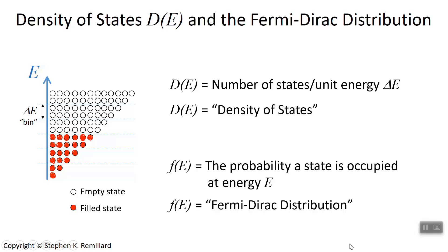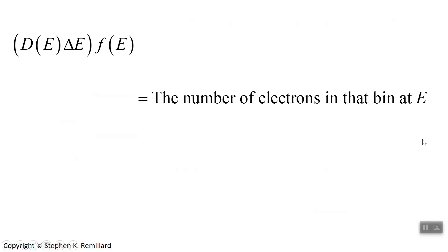The next thing we have to do is put an expression into it. The value of F of E is between 0 and 1 because it's a probability — it will never exceed 1, and it will never be negative. If D of E is the number of states in each one of these bins, and F of E is the probability that a state is occupied, then the product of the number of states times the probability of occupation must tell you how many electrons there are. The product D of E times F of E tells you how many electrons there are per span of energy delta E. D of E times delta E is the number of states available times F of E, the probability that an electron is in that state. The product is the number of electrons that this bin has at energy E.